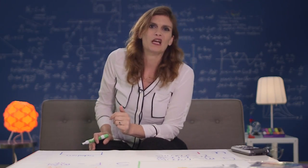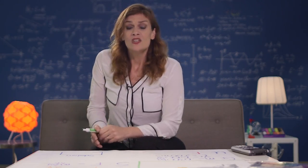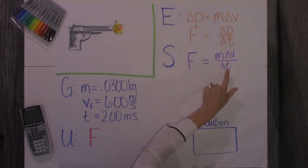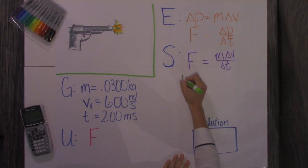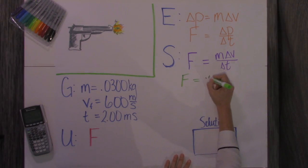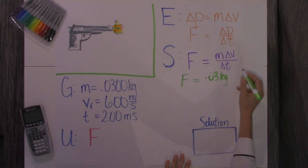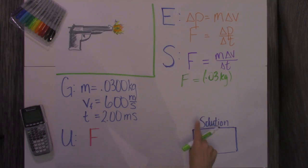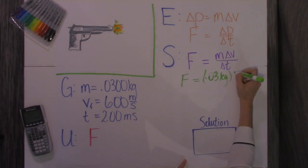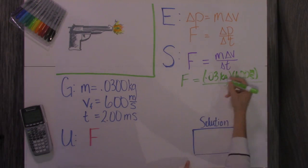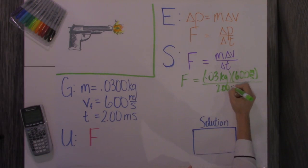We're going to ignore any changes to the bullet's mass when it's fired out of the gun. In our solution, the force equals the change in momentum divided by the change in time — that's the impulse-momentum theorem. We fill in our numbers: 0.03 kilograms times a change in velocity of 600 meters per second, divided by the time of 2 milliseconds, written in scientific notation as 2 times 10 to the negative 6 seconds, so our force will be in newtons.